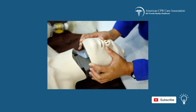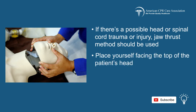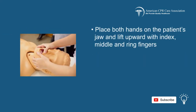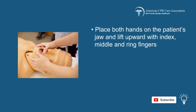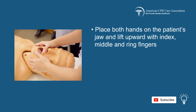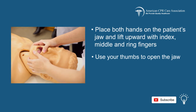If there is a possible head or spinal cord trauma or injury, the jaw thrust method is to be used. To perform this method, place yourself facing the top of the patient's head, opposite from their body. Place both hands on the patient's jaw and lift upward with your index, middle, and ring fingers, and use your thumbs to open the jaw.